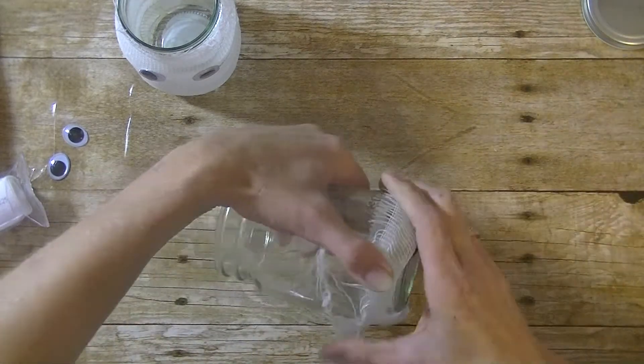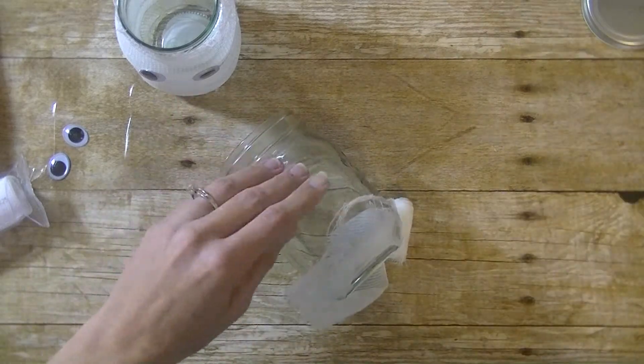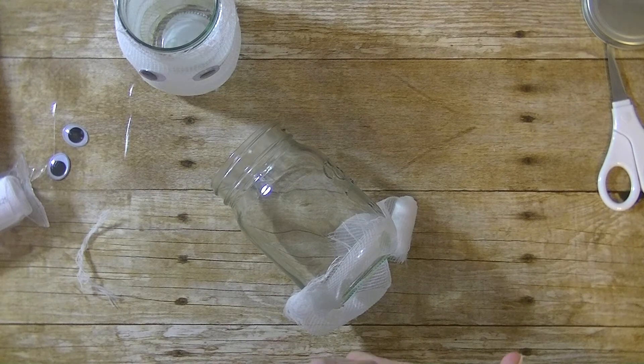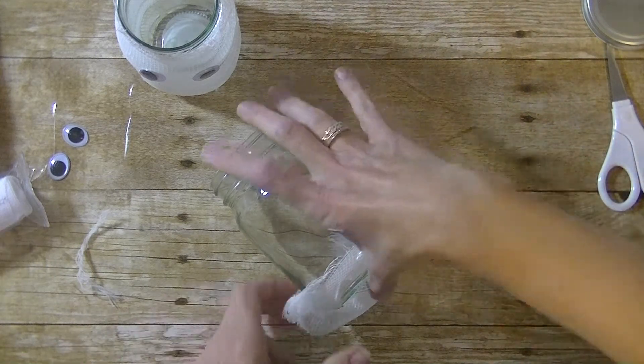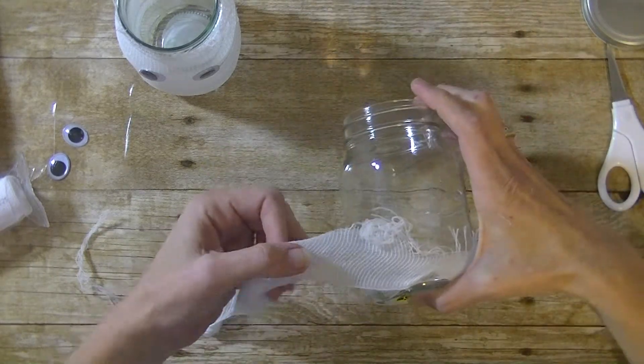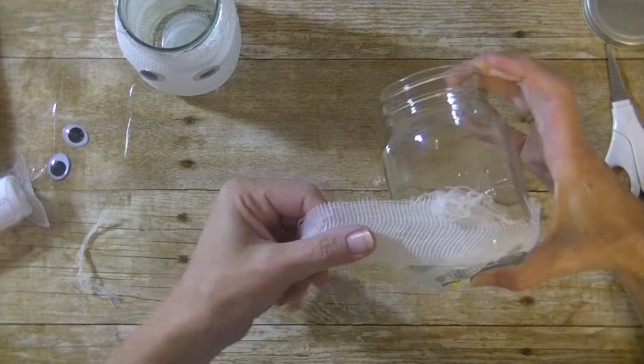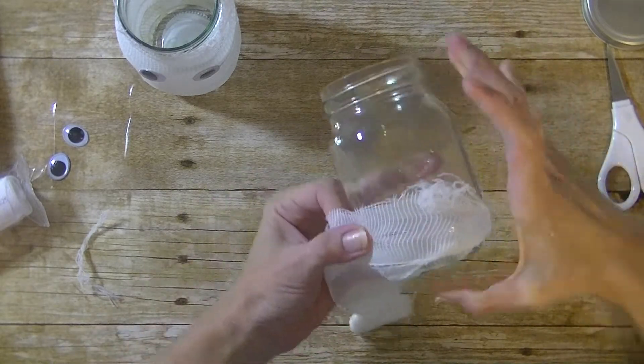Now we're going to roll. I'm actually going to cut off this part here. Get the glue off my fingers. And now I'm trying to keep the straight edge of the gauze toward the bottom.